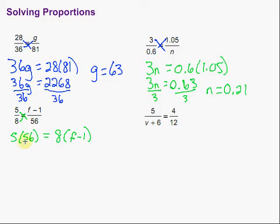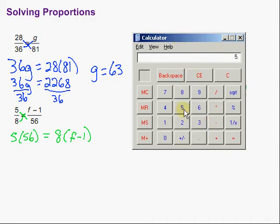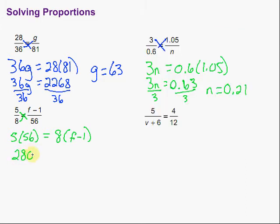Well, we need to multiply by the whole thing that's there. So on the left hand side, we have 5 times 56, which is going to be 280. So we have 280 is equal to, and then we're going to distribute that 8 through. So 8 times f and 8 times negative 1, or minus 1, gives us minus 8.